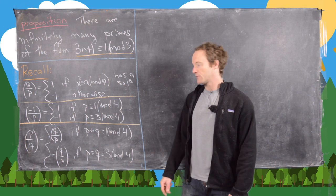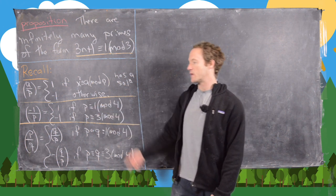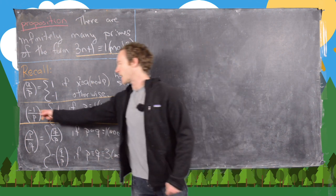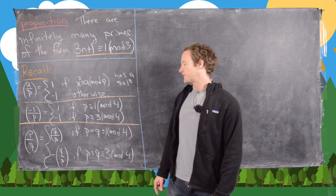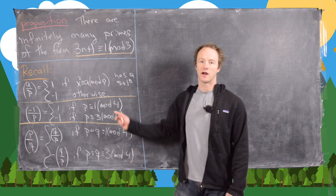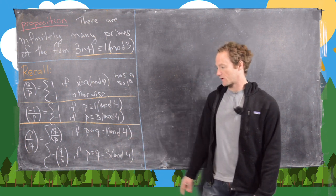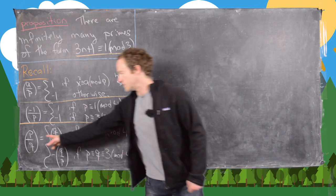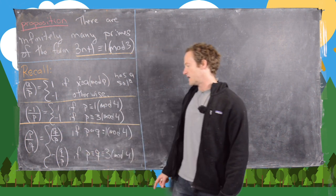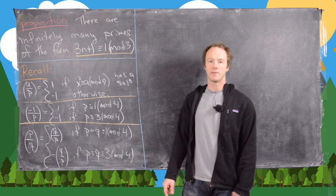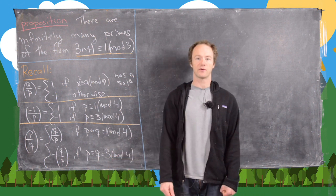We have a couple of results proved in previous videos. First, when negative 1 is a quadratic residue: the Legendre symbol negative 1 by p is 1 if p is congruent to 1 mod 4, and negative 1 if p is congruent to 3 mod 4. Then we have quadratic reciprocity, which says you can flip the Legendre symbol with a positive sign if one of them is congruent to 1 mod 4, and you pick up a minus sign if they're both congruent to 3 mod 4.